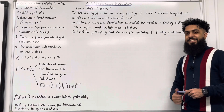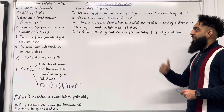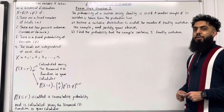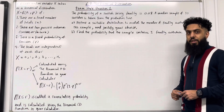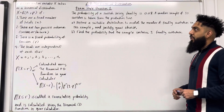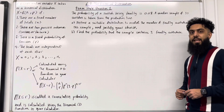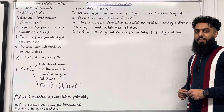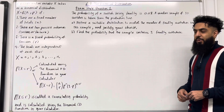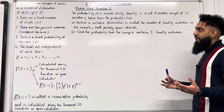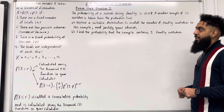Welcome back ladies and gents. In this teaching video I'm looking at 6.2, the binomial distribution. Now 6.2 represents chapter 6, section 2 of the Pearson A-Level Maths Applied Year 1 textbook. Let's go through the key facts of this section.